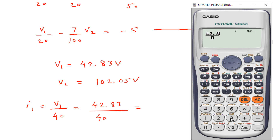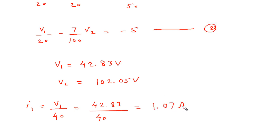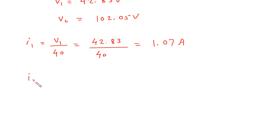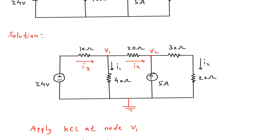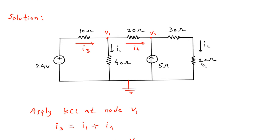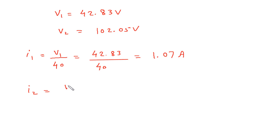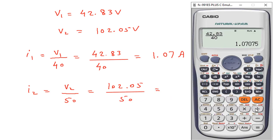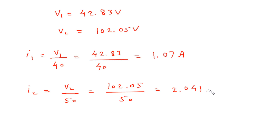42.83 divided by 40 gives I1 equal to 1.07 A. I2 is (V2 minus 0) by 50. V2 is 102.05, so I2 equals 102.05 divided by 50, which gives 2.041 A. The unit of current is Ampere. So I1 equals 1.07 A and I2 equals 2.041 A. For Electrical and Electronics Engineering related questions and answers, visit the link in the description below.